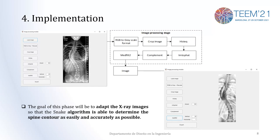We have implemented this in MATLAB. You can see here some screenshots. On the left, in the first image, you can see the initial step where the image is loaded before applying transformations. First, we apply RGB to grayscale conversion and a rescale process. After that, we crop the image and apply additional filters in order to prepare the X-ray image for the algorithm, making it easier for the algorithm to determine the contour.